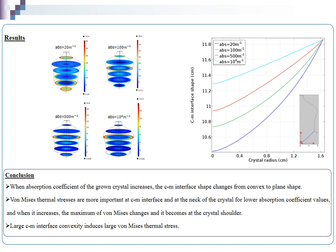Von Mises thermal stresses are more important at crystal-melt interface and at the neck of the crystal for lower absorption coefficient values.